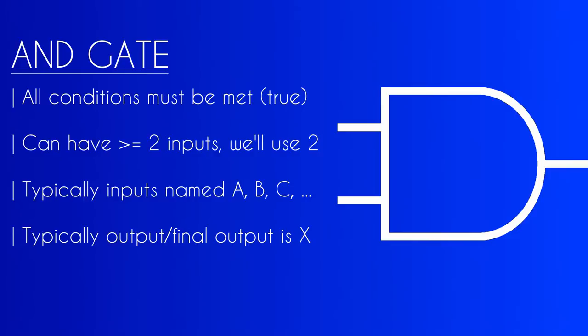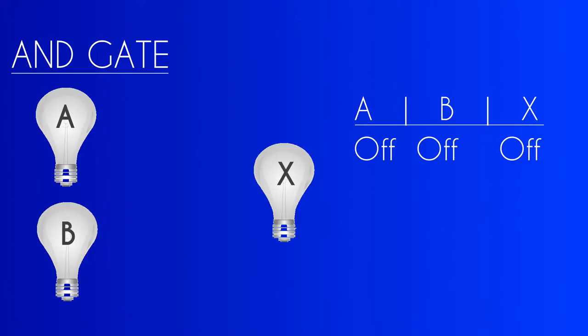We'll label these A and B conventionally. The final Boolean coming out, we'll call this X, because that's how it's conventionally named. And to make this easy, let's think of this in terms of lights, light bulbs, because lights are much like binary. They only have two states, on or off. There is generally no third state.